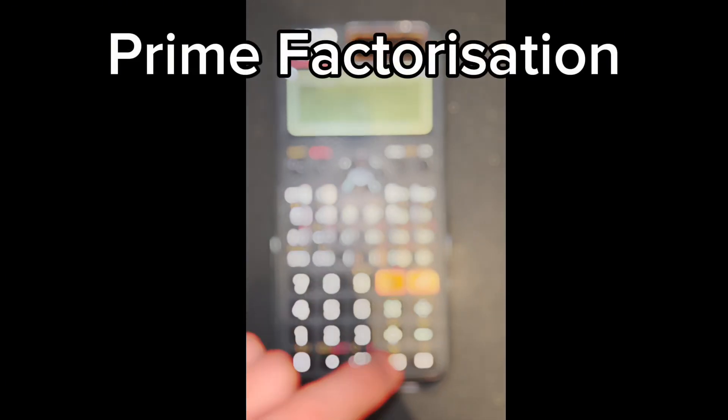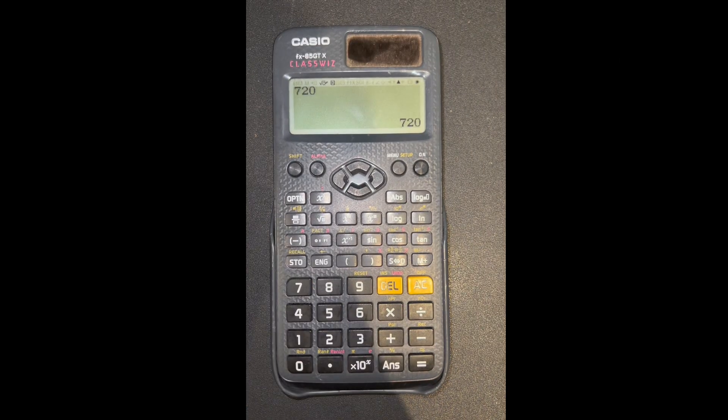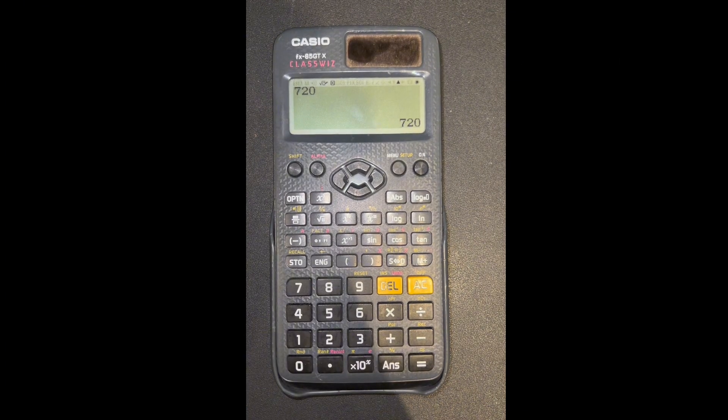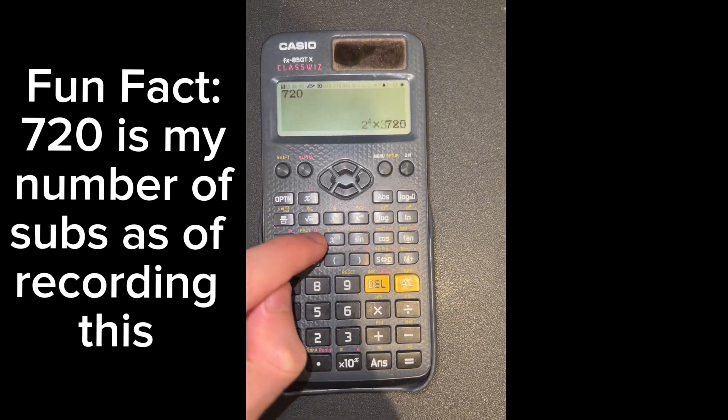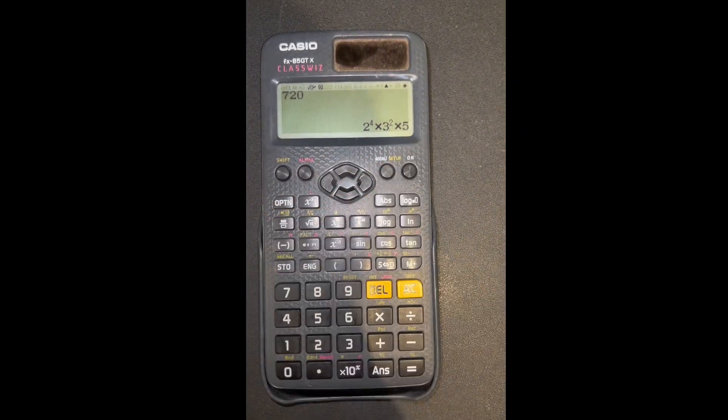The next thing I'll show you is how to find the prime factors of a number. Let's say we want to find the prime factors of 720. Well, all you need to do is press shift, then look for the fact button, press it, and here you go. There's the prime factors.